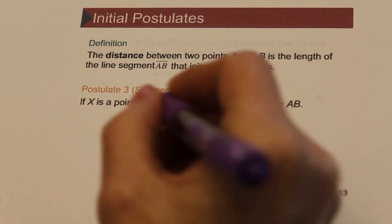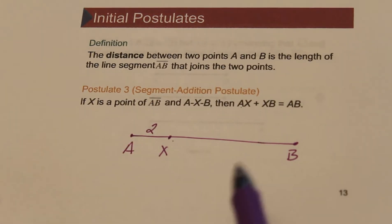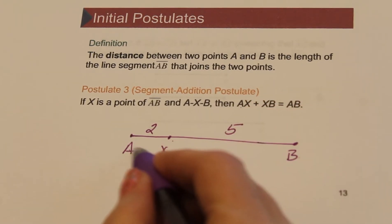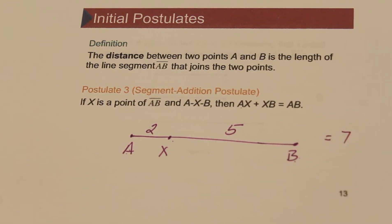Alright, so let's say the length of AX is 2 and let's say the length of XB is 5. Then we would say the length of the entire segment from A to B would be 2 plus 5, or 7.